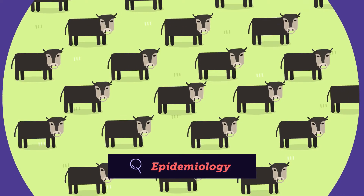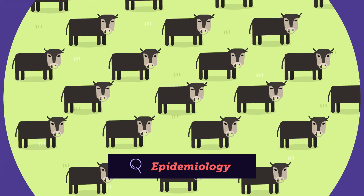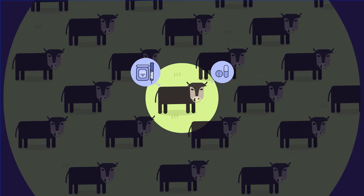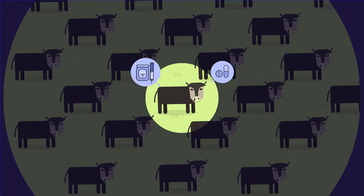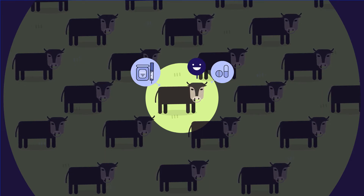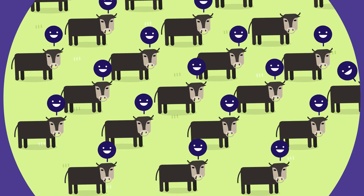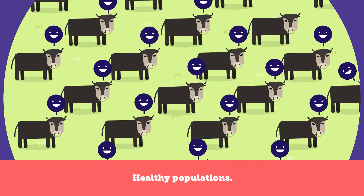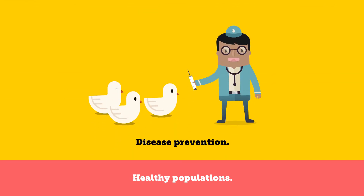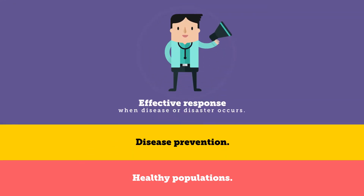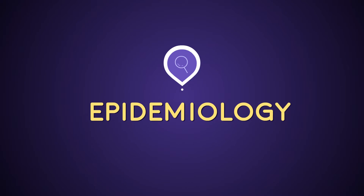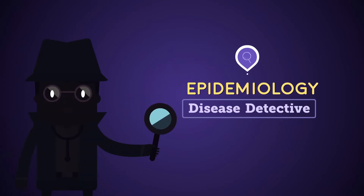Epidemiology looks at populations. The objective of medicine and surgery is to treat diseases in individuals. The purpose of epidemiology is to build healthy populations, prevent disease, and respond effectively when disease or disaster occurs. Epidemiology is disease detective work.